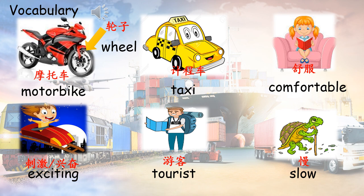Module 6, Our World. Vocabulary: motorbike, wheel, taxi, comfortable, exciting, tourist, slow.